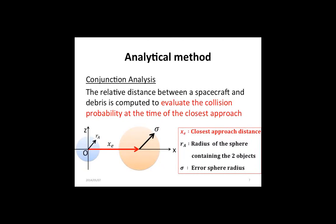Instead, this study adopts conjunction analysis so that the relative distance between a spacecraft and debris is computed to evaluate the collision probability at the time of closest approach. For that, I am using: closest approach distance Xe, radius of the sphere containing the two objects Ra, and error sphere radius sigma. By defining these three parameters, I can estimate the probability of collision. Ra and sigma can be imposed, so the remaining parameter is closest approach distance, to be calculated by conjunction analysis.